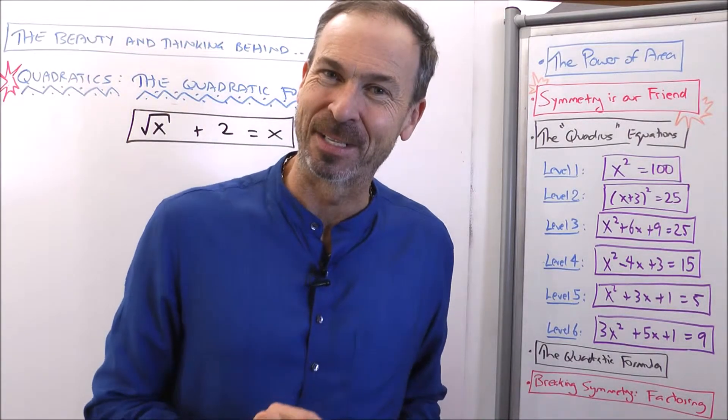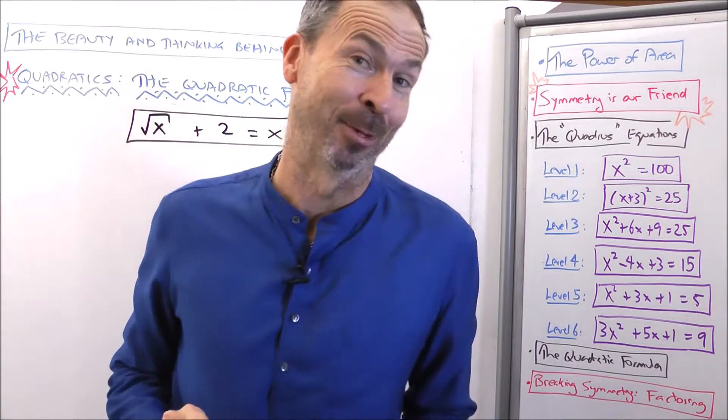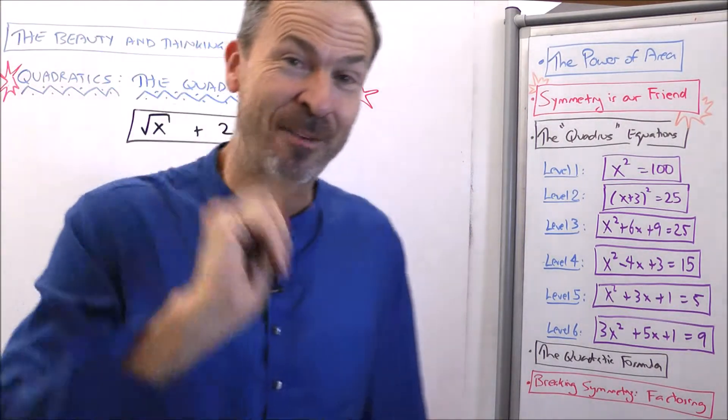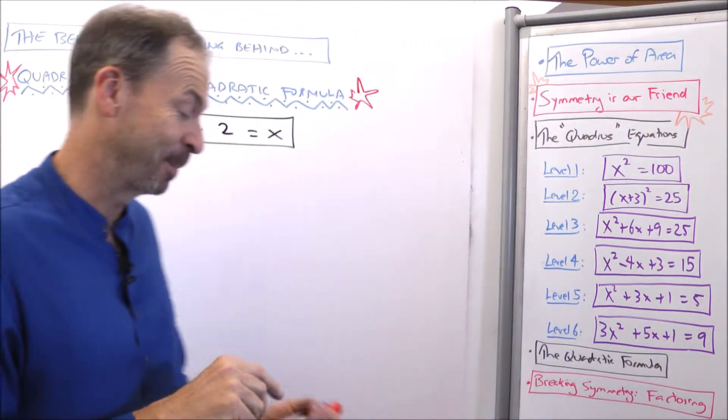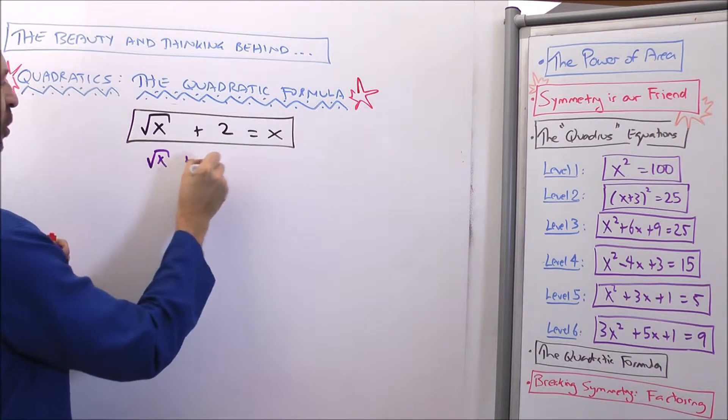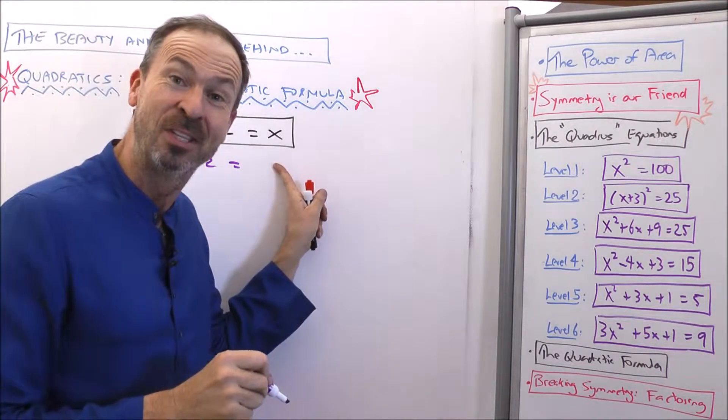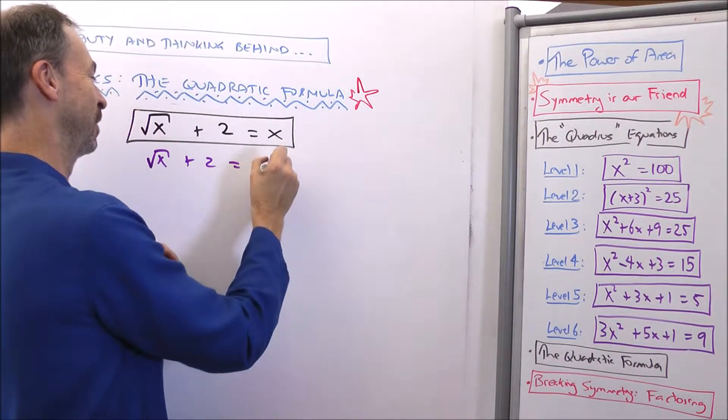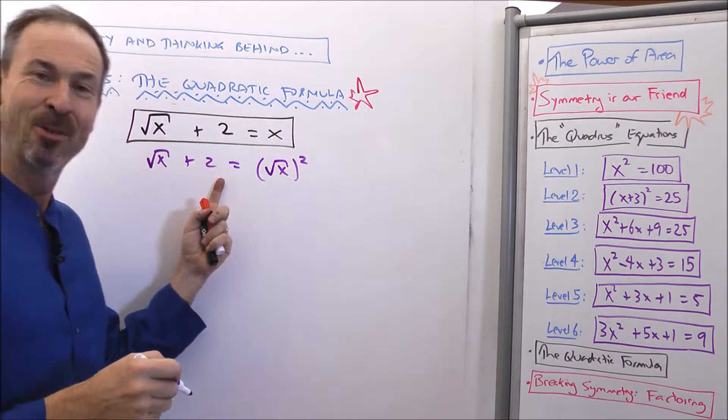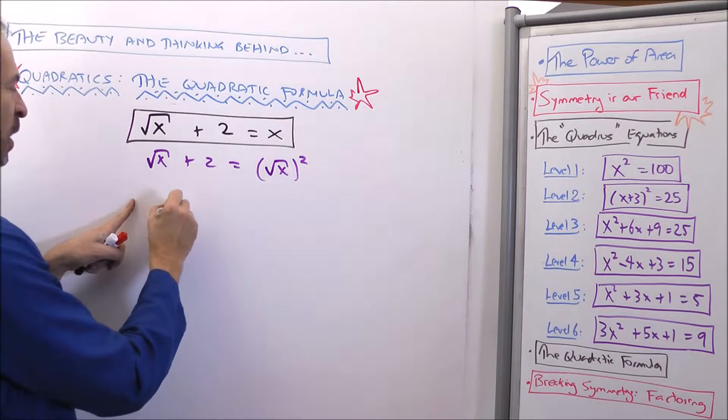However, it is one in disguise if you change your mind about what the variable is. Now, normally you think the variable is x, but let me think of the variable being the square root of x. Because this is the square root of x, sure, plus 2 equals the square root of x squared. The square root of x squared. Some variable squared, some variable, and a constant. So actually, it is a quadratic equation.